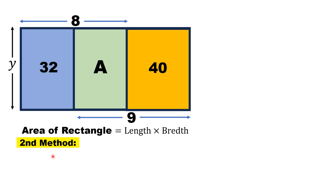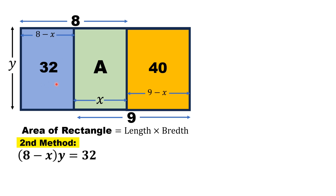Now let me move to the second method. Let the length of the green rectangle be x. Then the length of the yellow rectangle is 9 − x, and the length of the blue rectangle is 8 − x. The width for all three rectangles is y. The area of the blue shaded rectangle is (8 − x)·y = 32, which gives 8y − xy = 32.